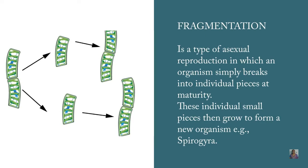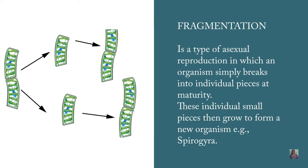Now let us discuss another type of asexual reproduction: fragmentation. In this type of reproduction, the organism simply breaks into individual pieces at maturity. These individual small pieces then grow to form a new organism.